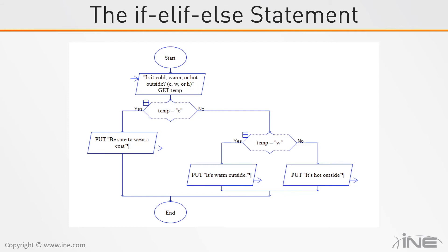Then we check to see what value the user put in. If the temperature is equal to C — if the user puts in C, that would be true — so it would go on the yes side and print 'be sure to wear a coat,' and then the program would end. If the user had put in W, the answer to temp equals C would have been no, so the program would go down the no side and check if temp equals W. Seeing that it is equal to W, it would go down the yes side and print 'it's warm outside,' and then the program would end.